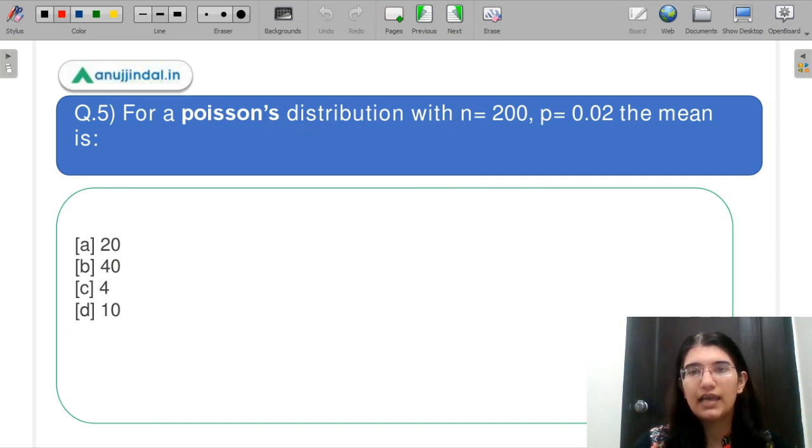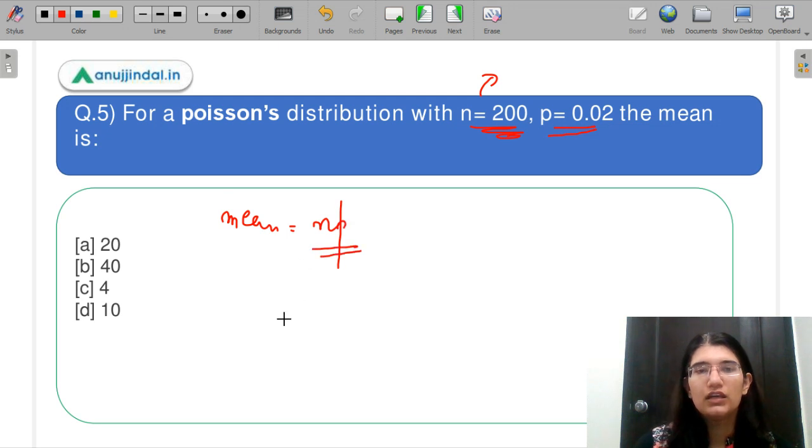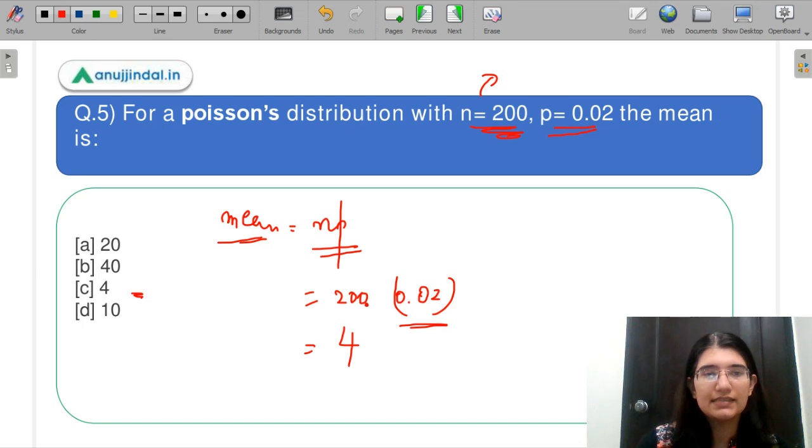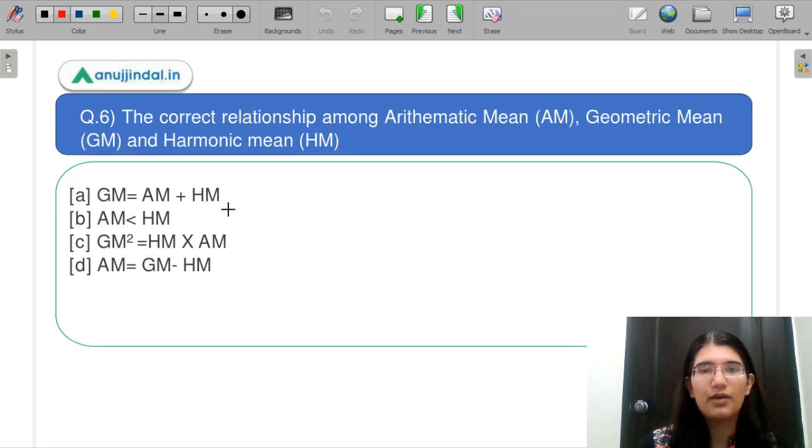Let us move on to the next question. For Poisson distribution with n sample size equal to 200 and p is equal to 0.05, then mean is. Toh Poisson distribution mein hai jo aapka mean hota hai, uski value hoti hai n into p. So the mean in the Poisson distribution is np. And here you have been given 200 as n and p is 0.05. So inko multiply karke you will get your answer. And do let me know in the chat box, what do you think is the correct answer? So here the correct answer is C. So I hope you have been answering in the chat box.